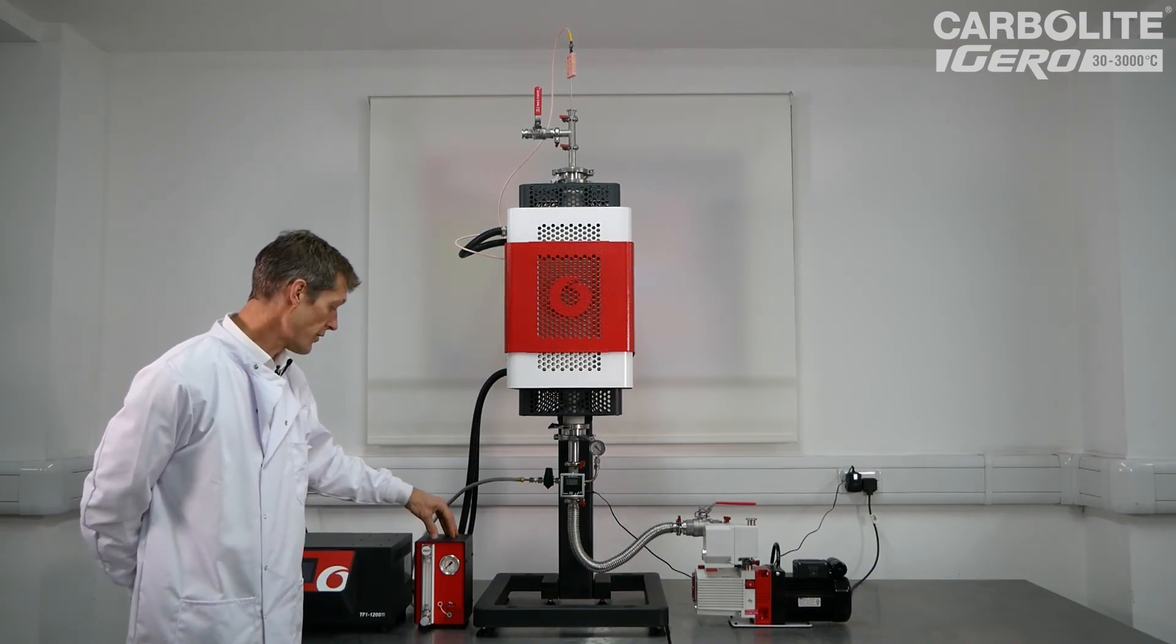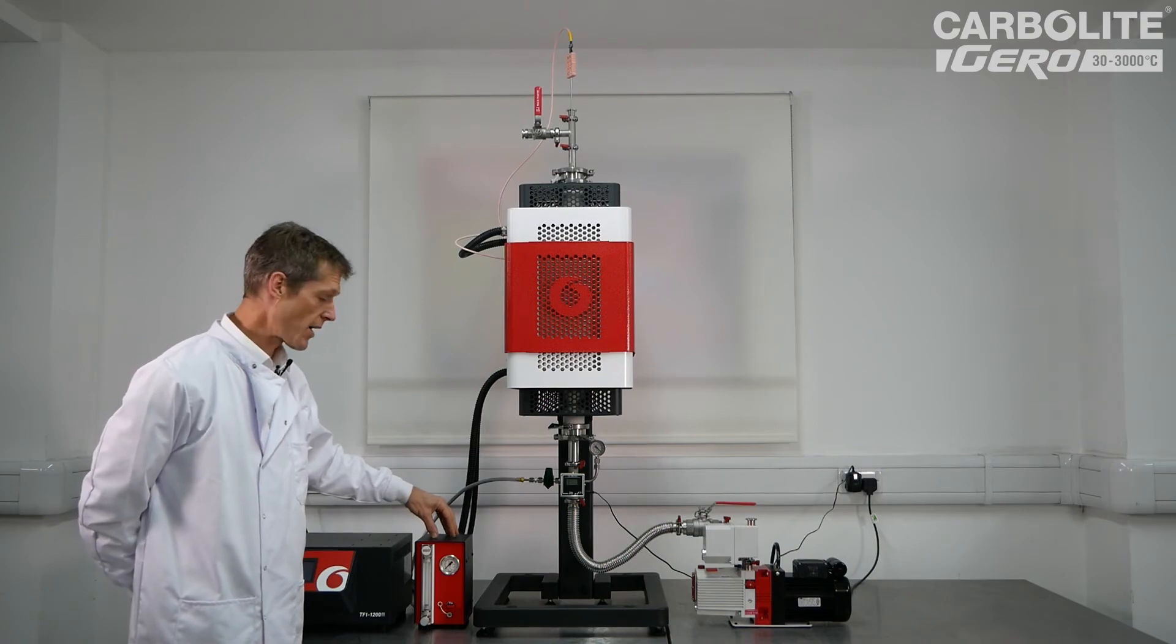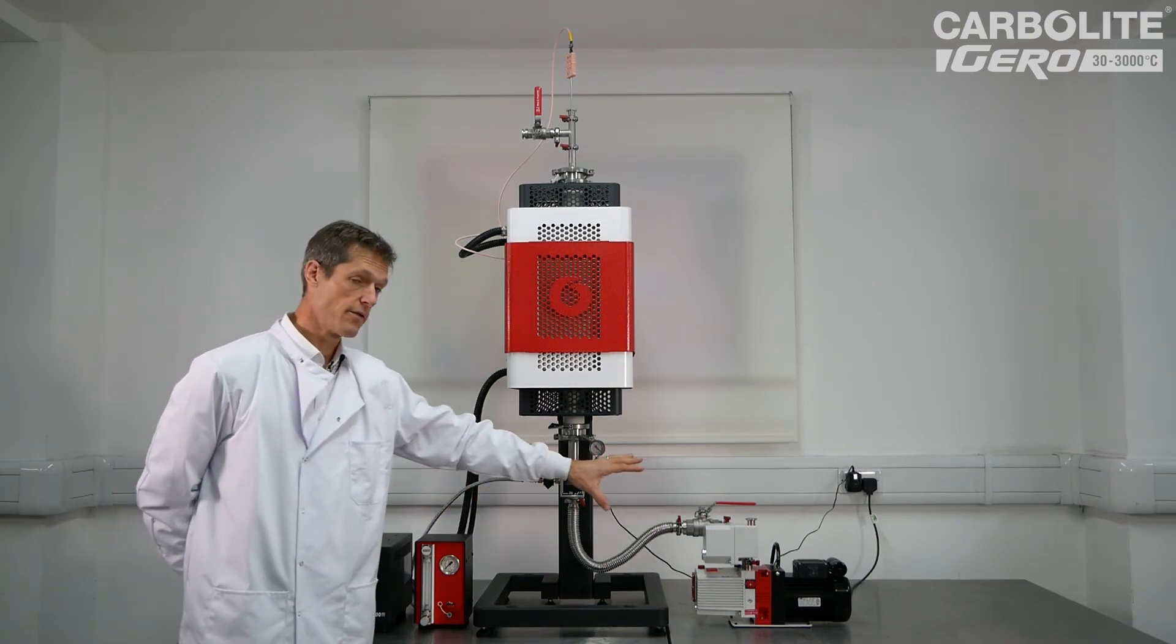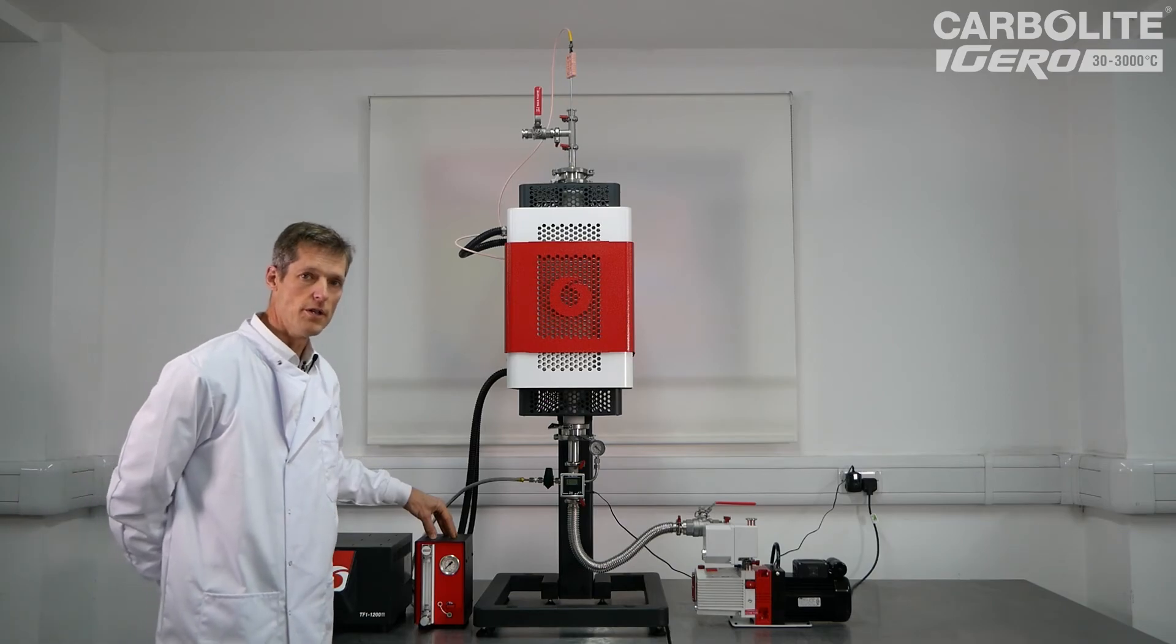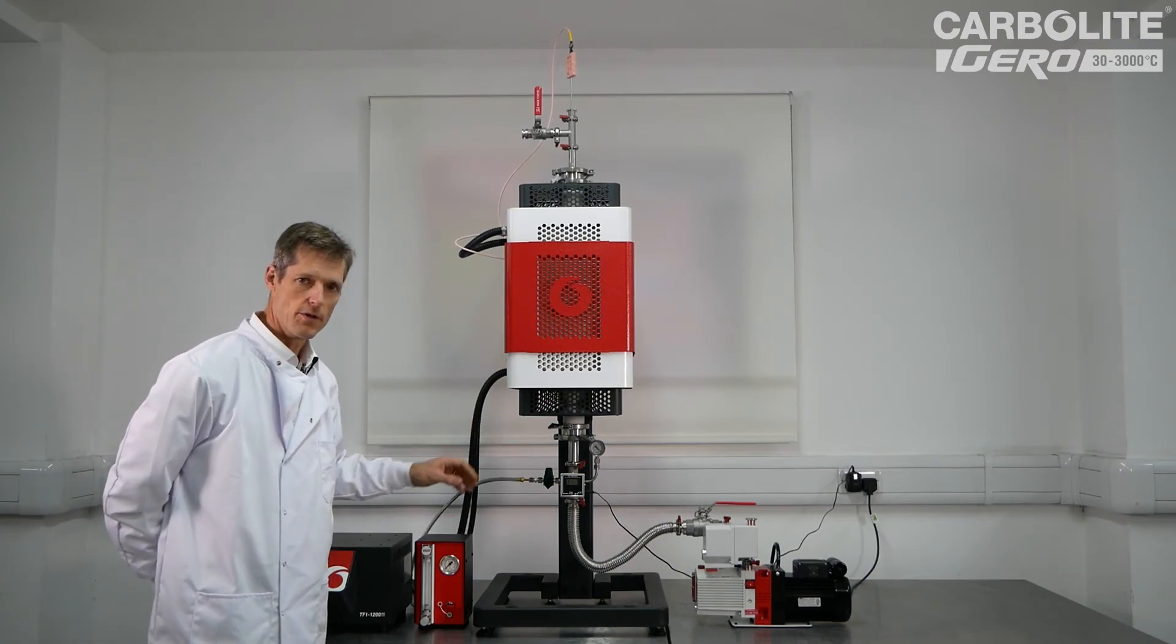This is another modular part of the system, which can be supplied without the rest of the vacuum system, just to allow a controlled inert atmosphere inside the work tube.